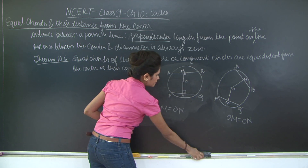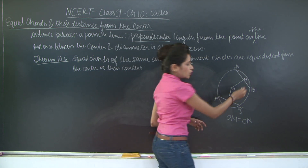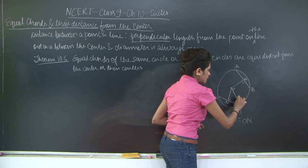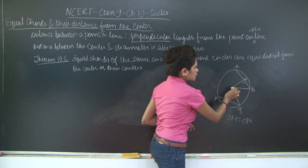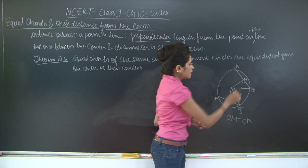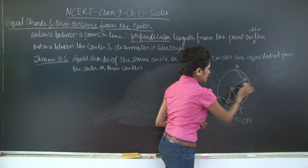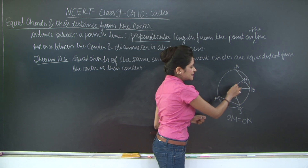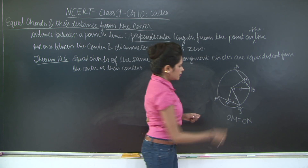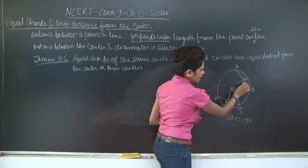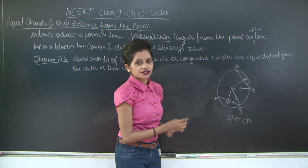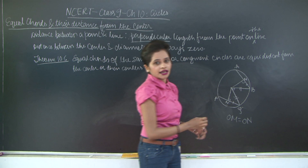Let's now prove this. We have two equal chords and their perpendicular distances from the center. We need to prove that OM equals ON. Complete the triangles by drawing OB and OQ. OB equals OQ because they are radii of the circle. AB equals PQ — this is given — so half of AB equals half of PQ, therefore MB equals NQ, since the perpendicular drawn from the center to the chord bisects the chord. We have a right angle triangle, with equal hypotenuses and one equal side, so the two triangles are congruent by the RHS test of congruence, giving us OM equals ON.